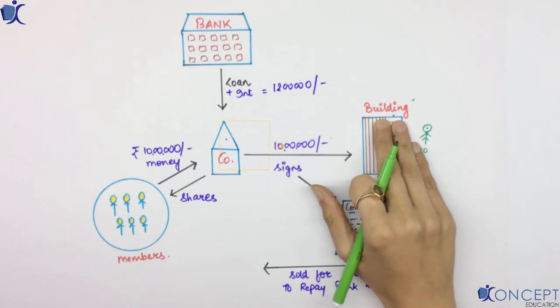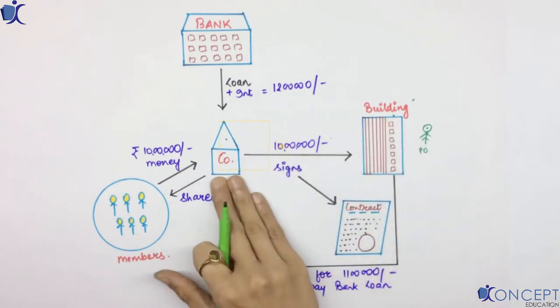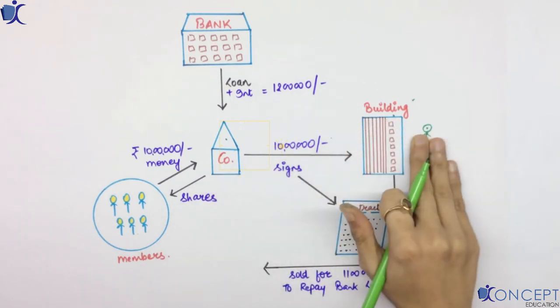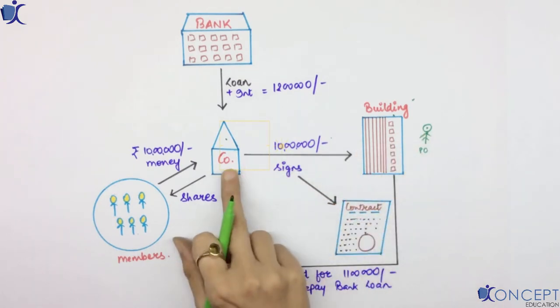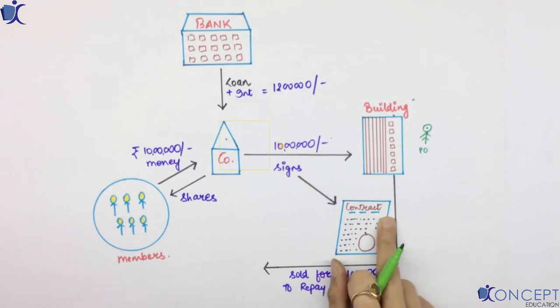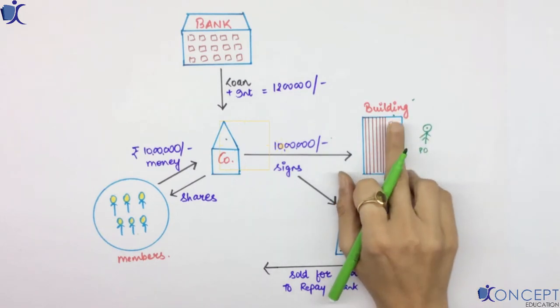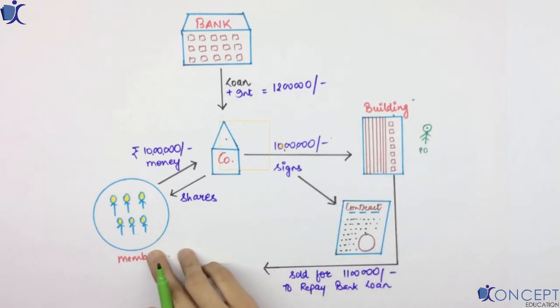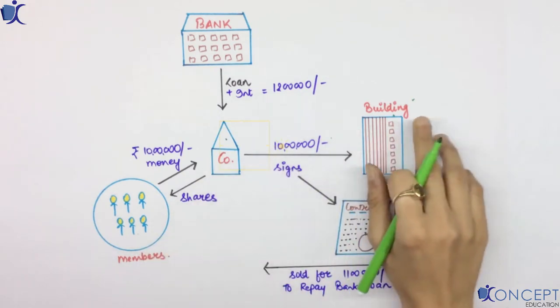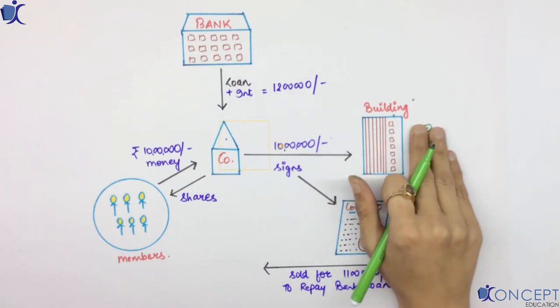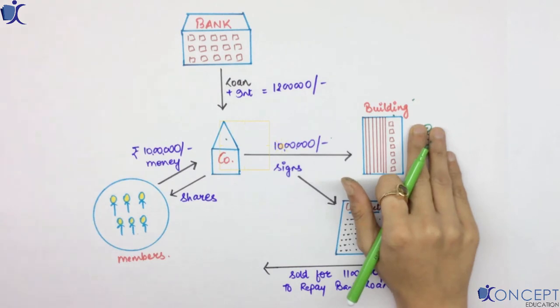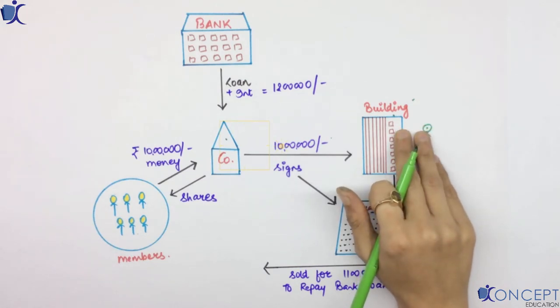Why a big no? Because the members are only the owners of the company. The company has become the legal owner and the property owner of this building. Members don't have any right in this building. So we are very clear that this building is owned by the company.